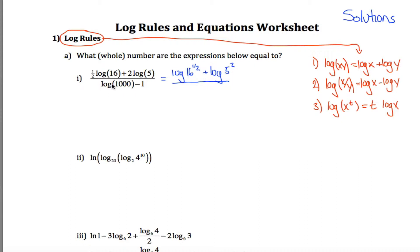Down here in the denominator, we have the log of 1,000. When you don't specify the base, it's implied to be base 10. So this is really the log base 10 of 1,000, which is asking: to what power must you raise 10 to make it 1,000? Well, 10 to the third power is 1,000, so the log of 1,000 is just equal to 3. So I can replace this entire denominator with 3.